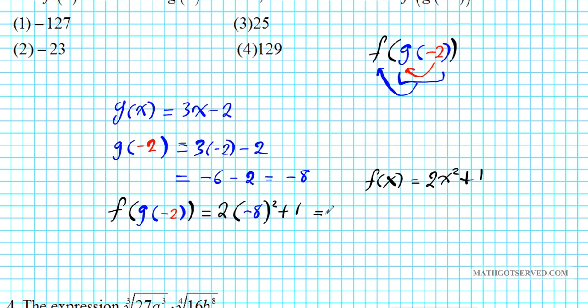Let's simplify that. Using the order of operations, negative 8 squared is 64. So 2 times 64 plus 1. 64 times 2 is 128. 128 plus 1 is 129. Our answer is option number 4.